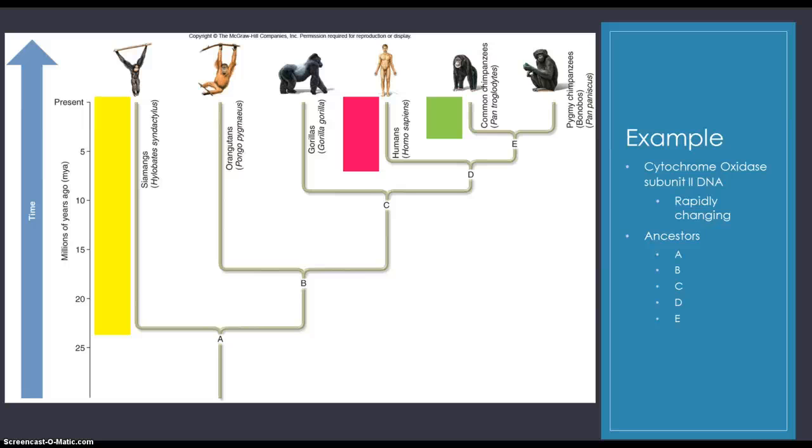Okay, in this example I'm going to show you how we use rapidly changing genes, in this case cytochrome oxidase subunit 2 DNA, and analyze closely related species. Branch A shows that there was once a species, ancestor A, that branched into siamang and another species that I just like to call ancestor B. Then ancestor B branched into orangutans and ancestor C, which then branched out into gorillas and ancestor D, which then branched out into humans and ancestor E, which then branched out into two different kinds of chimps, the common chimp and the pygmy chimp. Okay, so we know that siamang are the oldest of the six species, then orangutans and gorillas and humans, and then the last two chimps.